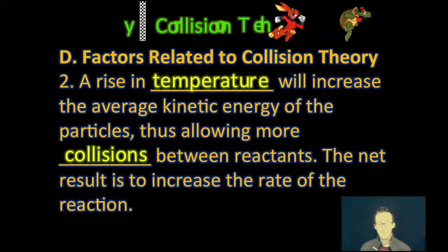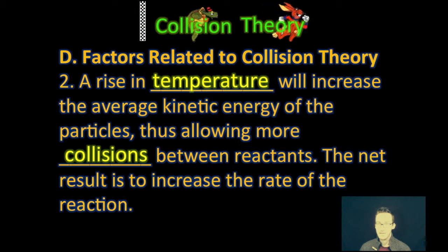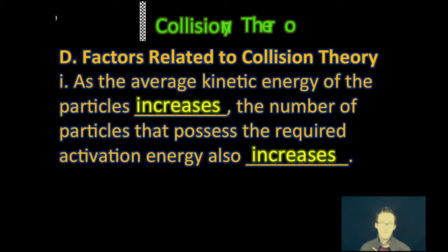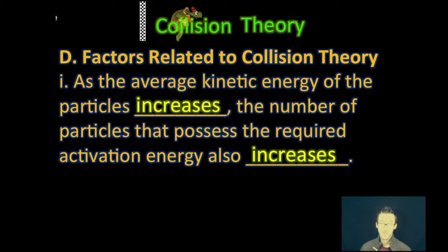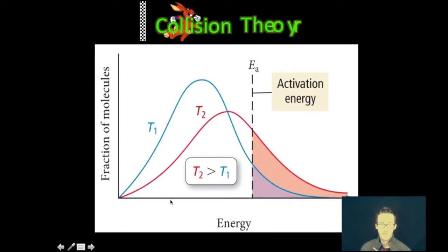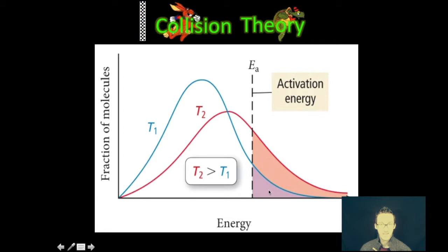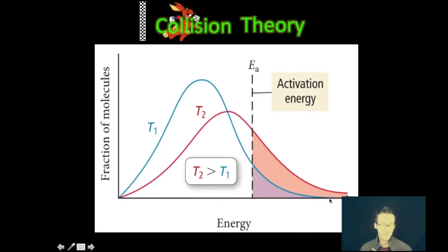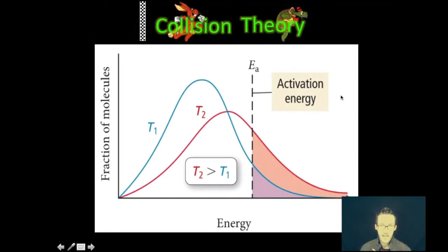Two — temperature is a key factor that affects the rate. When you increase the temperature, you increase the average kinetic energy of the particles, thus allowing more collisions between reactants. As you increase that temperature, the number of particles that possess the required activation energy also increases. On a Maxwell-Boltzmann plot, T1 represents the lower temperature where a smaller fraction of molecules have the correct activation energy for a successful collision. By heating things up, you get a greater distribution of molecules with that required activation energy, and therefore a greater number of successful collisions.